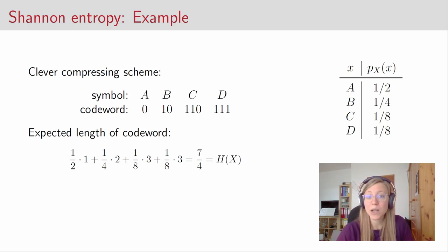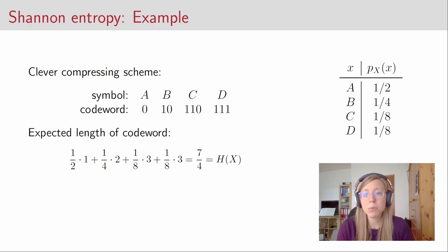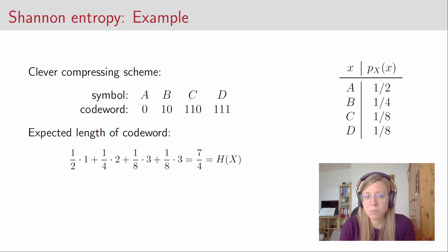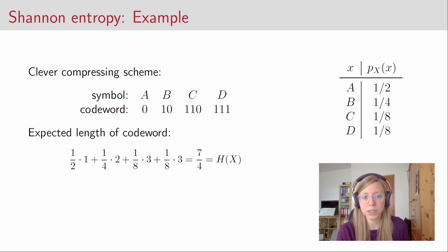So that means we cannot do better. If we want to be able to reliably decode the messages that we send, then this is the minimum amount of bits we can use to encode the symbols. Of course you could use shorter codewords — for example encode b also with a single bit — but then you wouldn't be able to reliably decode the message. So this is the best that we can do, and it matches exactly Shannon's theorem.